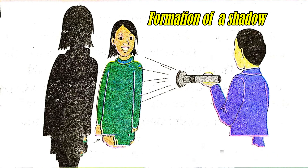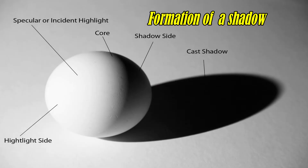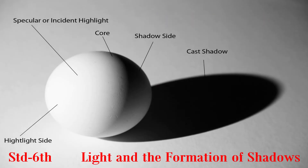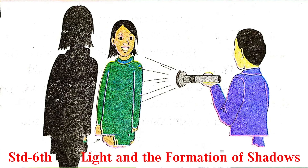Shadow: A shadow is formed when the path of light is obstructed by an object, and a shadow is always black.